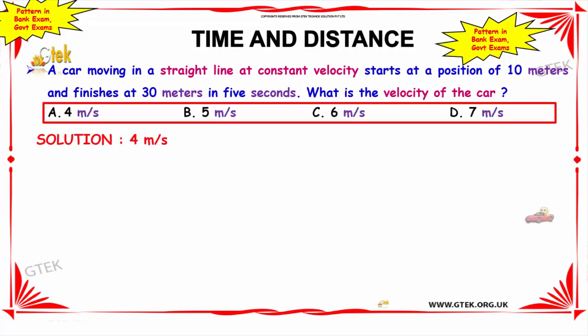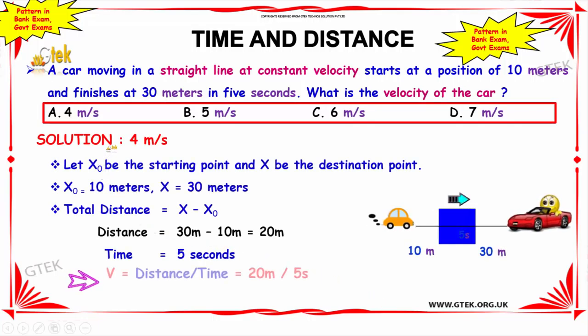Let us see the explanation for this problem. Consider, from the equation, let x0 be the starting point and x be the destination point. Here in the equation, the starting point x0 is given as 10 meters and the destination point x is given as 30 meters.